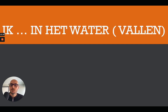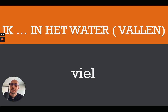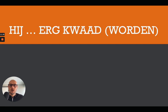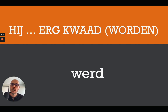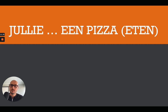Next: ik [blank] in het water, and the verb is vallen — to fall. I fell in the water. The correct answer is ik viel in het water. Then: hij [blank] erg kwaad, and the verb is worden — to become in Dutch. He became very angry. The correct answer is hij werd erg kwaad.